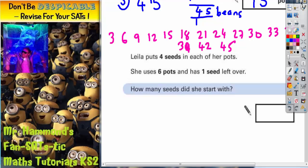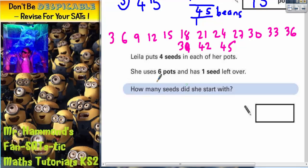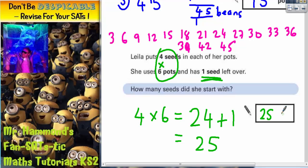Well, this one's nice and straightforward. So she's got 6 pots and each of them has 4 seeds. So it's 4 multiplied by 6. So 4 times 6 equals 24 seeds. But she's got 1 seed left over. So she's got an extra 1 on top of that. So 24 plus 1 will give us 25 seeds. So she must have started with 25 seeds.